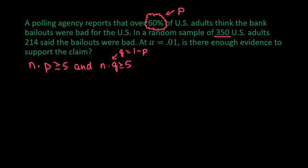So let's check these to make sure that we can even use the test. So we would have 350 times 0.6, which gives us 210, which is definitely greater than or equal to 5. And if we take 350 times q, which is again 1 minus p, which is 0.4, we end up with 140, which is also greater than or equal to 5.